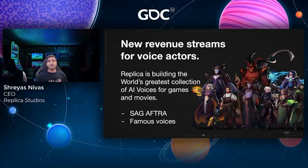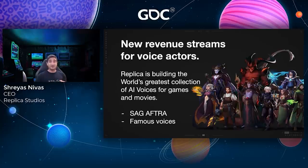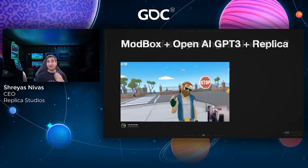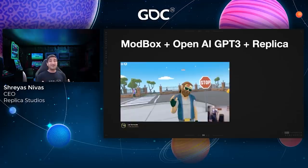Replica's mission is to build the world's greatest library of AI voices for games and movies. As the technology improves, we'll expand our pool of talent to include premium actors, famous voices, and celebrities, and work with the unions. The future of storytelling is not AI and NPCs alone, but we do think AI and NPCs have a part to play. This next video is actually a game created by a Replica user — it's called Modbox on Steam. The developer has done something smart by combining OpenAI's GPT-3 with Replica Voices, so in this VR experience you can walk around and have believable conversations with NPCs who respond to you in almost real time.